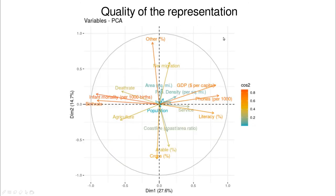You can redo some plots using cosine squared as a color scale — the larger the cosine squared, the more orange the diagram. This gives a good idea of which variables are most representative. Infant mortality per thousand births is the darkest, most well-represented in dimension one. For the second dimension, the variable 'other' is the darkest orange and therefore best represented by dimension two.